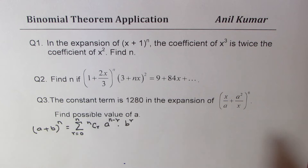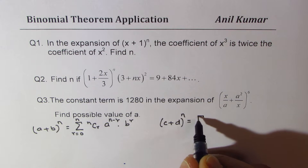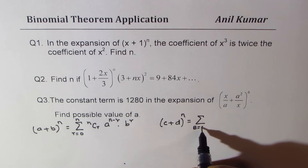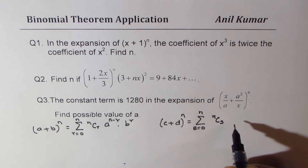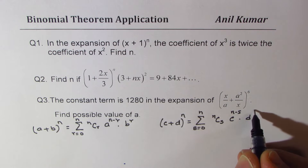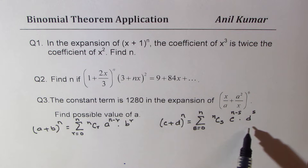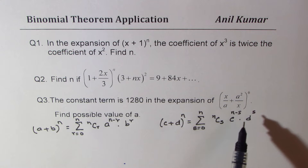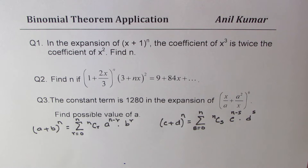Whenever you have two different binomials to be expanded, you could use two variables. For example, you could use (c + d) to the power of n, and instead of r you can use s, giving nCs times c to the power of n minus s times d to the power of s. Then you can work out the coefficients and compare them with x equals to 1 in this particular case to get the answer.